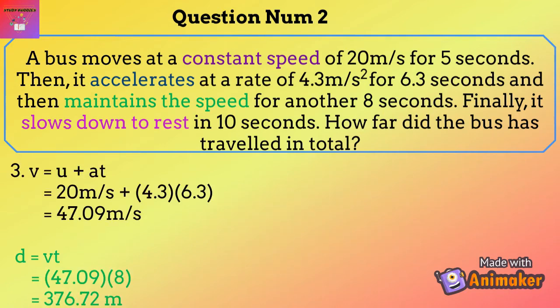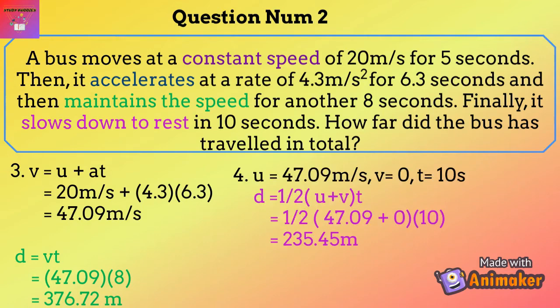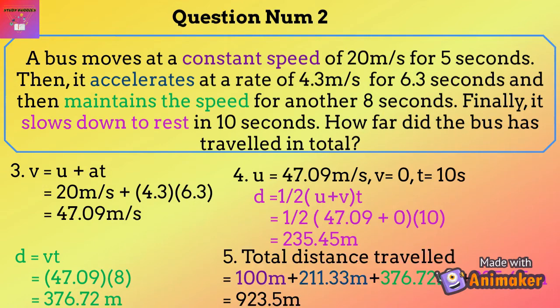Part three: the bus maintains the new speed for 8 seconds. Since the bus accelerated, the speed is no longer 20 m/s, so use v equals u plus at to find the new speed. Then distance equals velocity times time, giving 376.72m. Part four: the bus slows down to rest in 10 seconds. The final velocity is 0 and initial velocity for this part is 47.09 m/s. Using d equals one-half times (u plus v) times t gives 235.45m. Summing all parts: total distance is 923.5m.